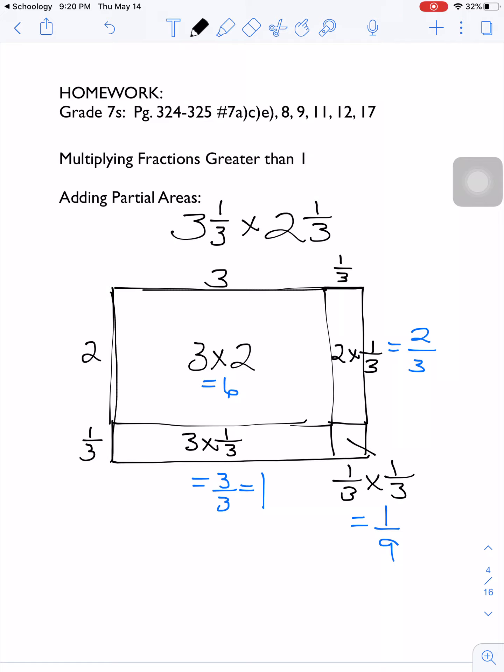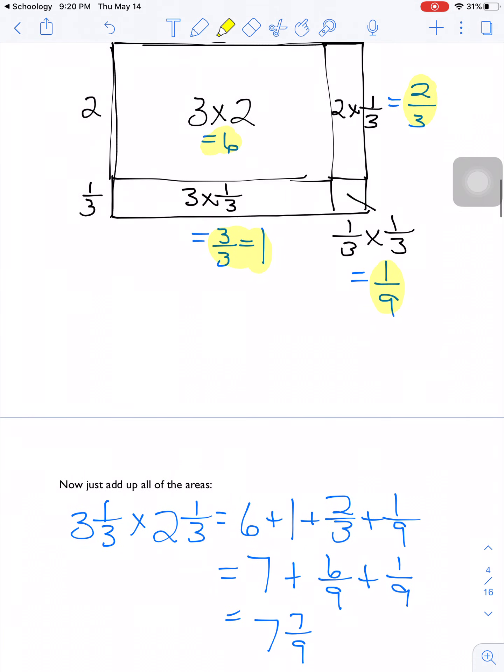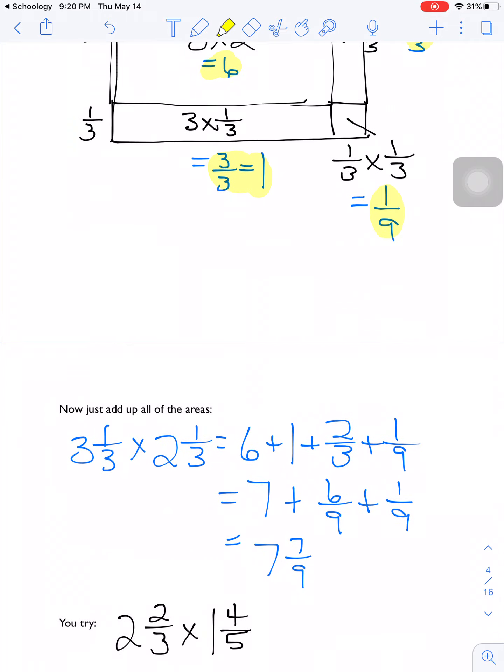Then we multiply the area for each rectangle and then we add those answers up. So here I've got 3 times 2, that's 6. Over here, I have 2 times 1/3 is equal to 2/3. Down at the bottom, I have 3 times 1/3, which is equal to 3/3, which is the same as one whole. And then I have a fraction times a fraction for my smallest rectangle. 1/3 times 1/3 is going to be 1/9. So I have to add all of those areas up to get my answer: 6 plus 1 plus 2/3 plus 1/9.